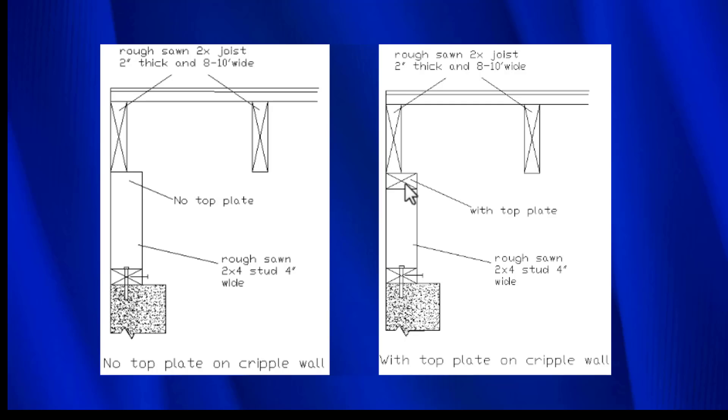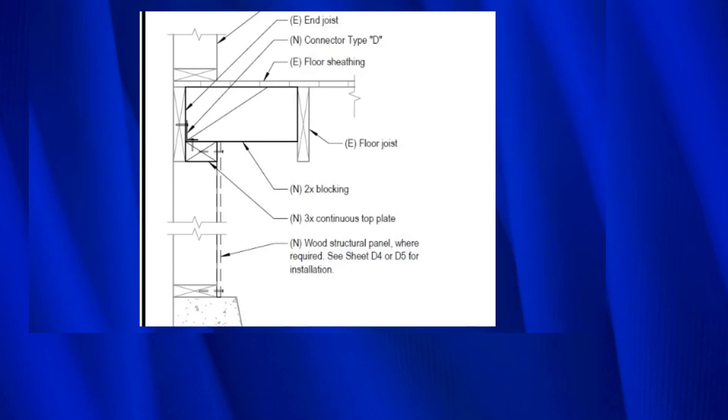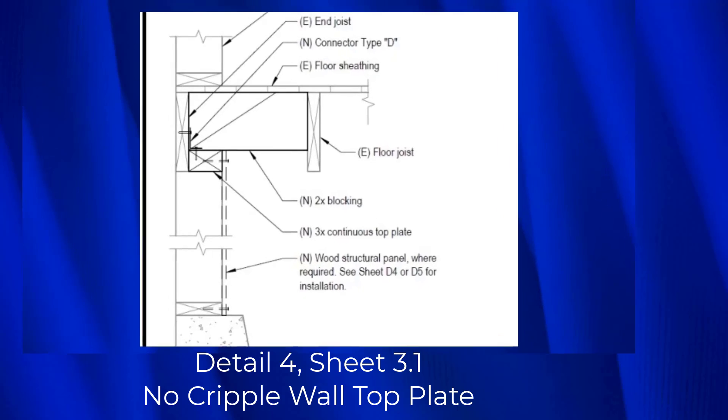We're going to look at a couple of ways to address this problem, including the one in the new government guideline. Actually, every house we've seen in the San Francisco Bay Area that does not have a top plate is built with full dimension lumber, so this would be a full four inches.